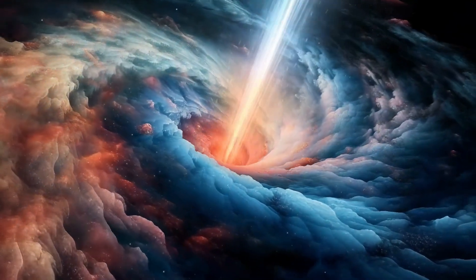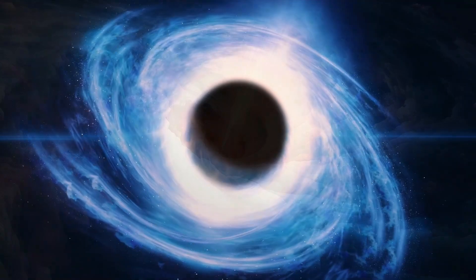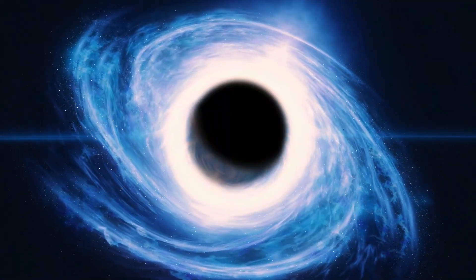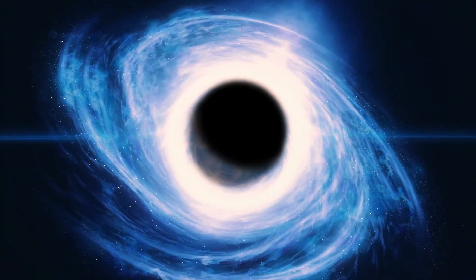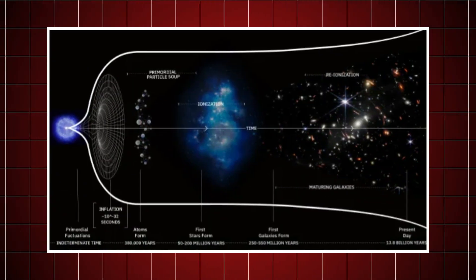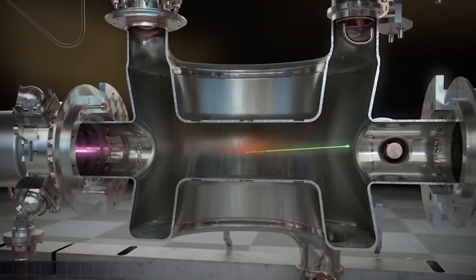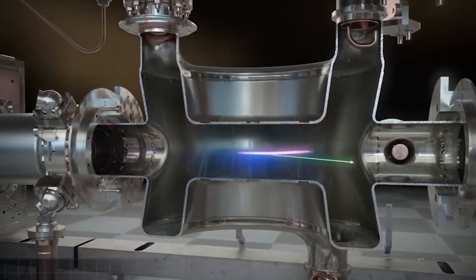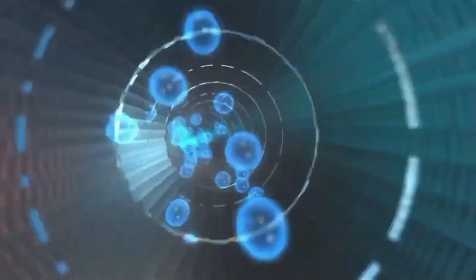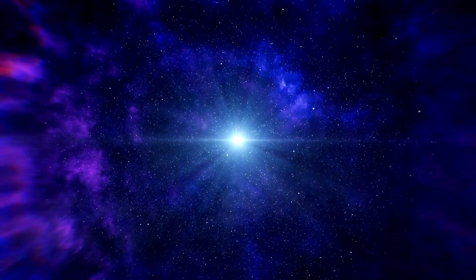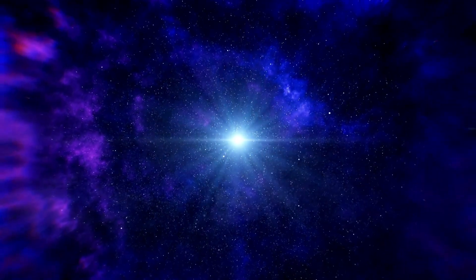Without this crack in the symmetry of the cosmos, there would be no stars, no galaxies, no humans. Think about that. The Big Bang should have created equal amounts of matter and antimatter, perfectly balanced. But when they meet, they annihilate each other completely, leaving nothing behind but energy. If symmetry had held, the universe should be empty.